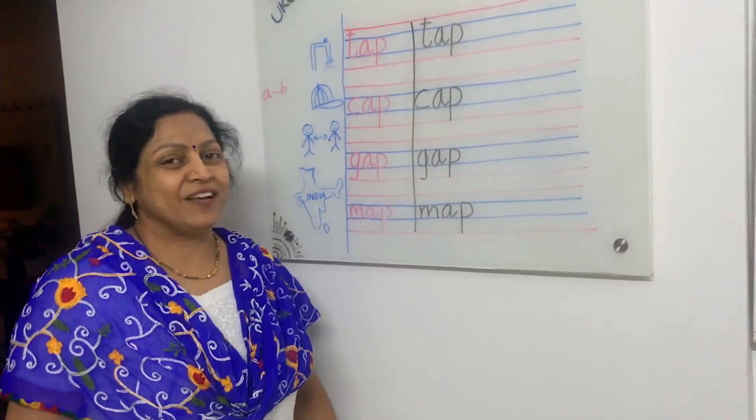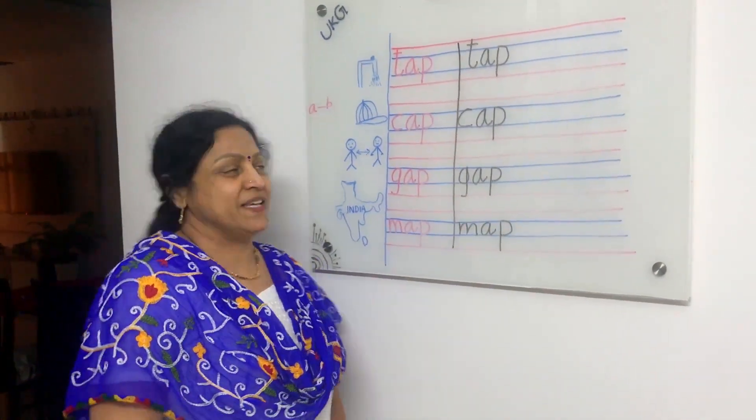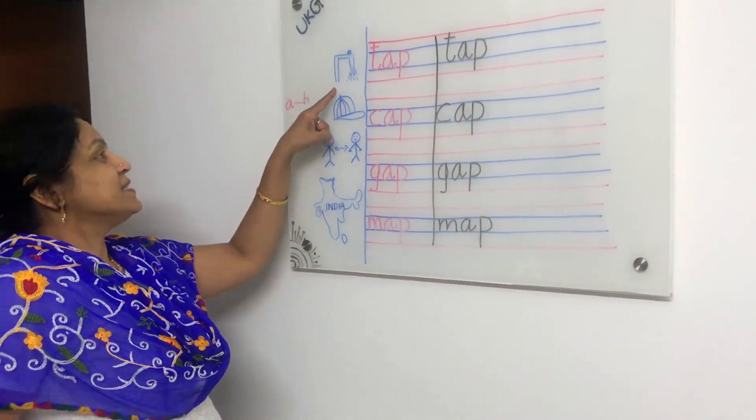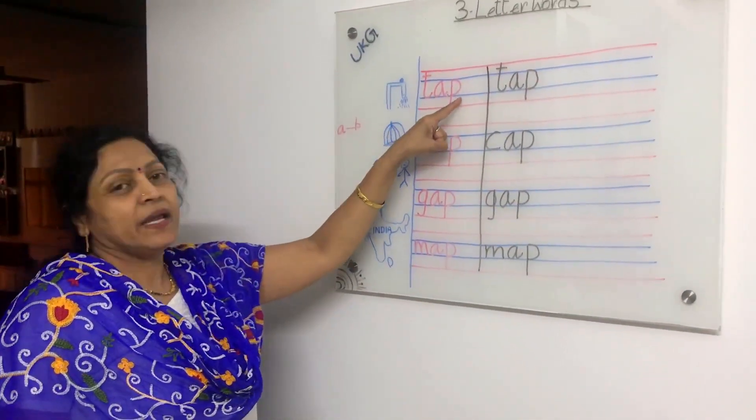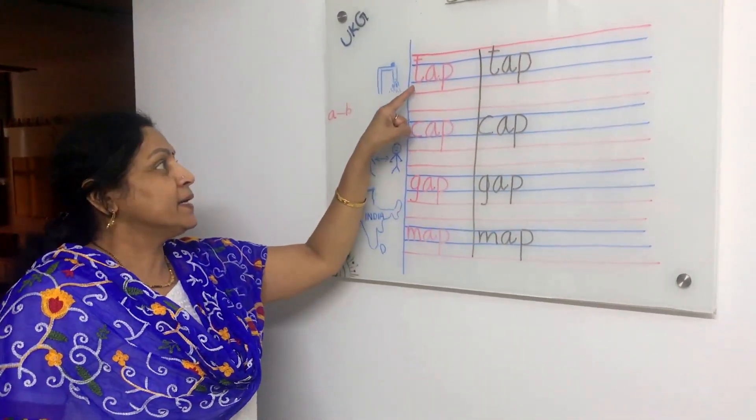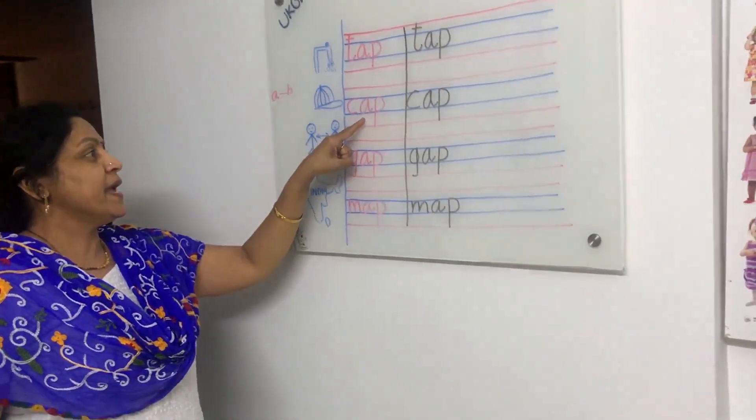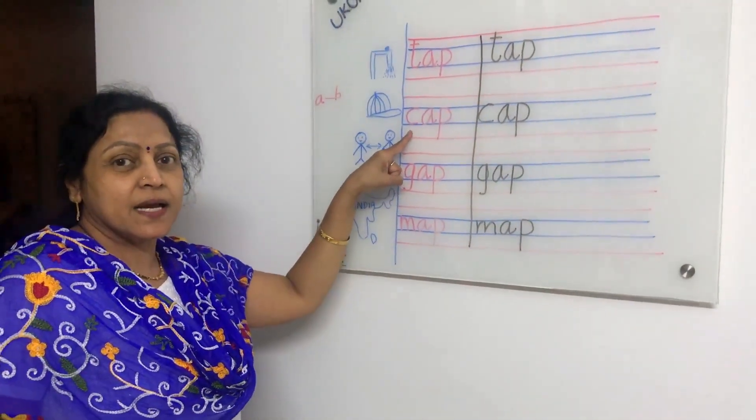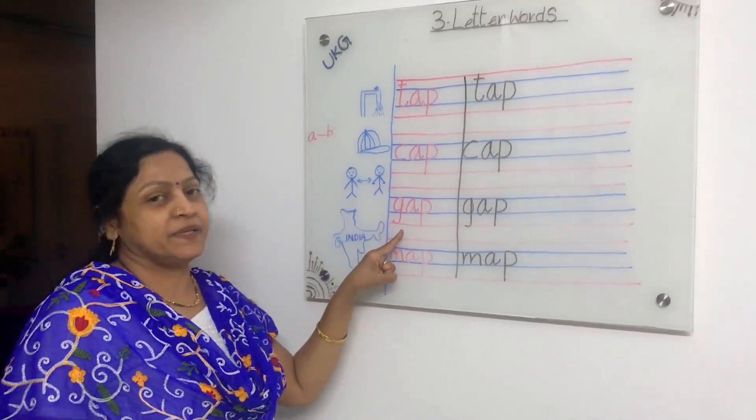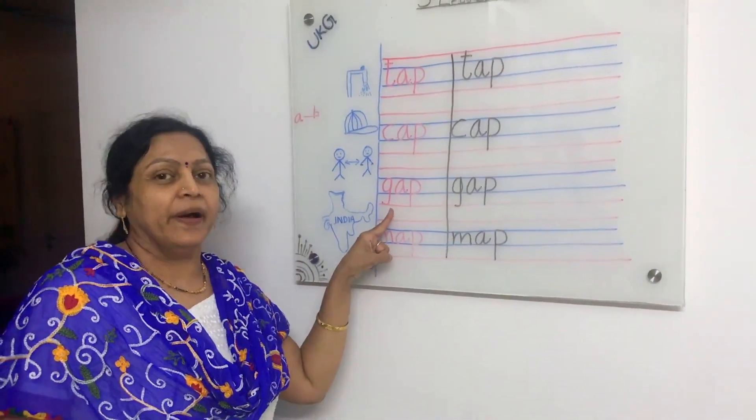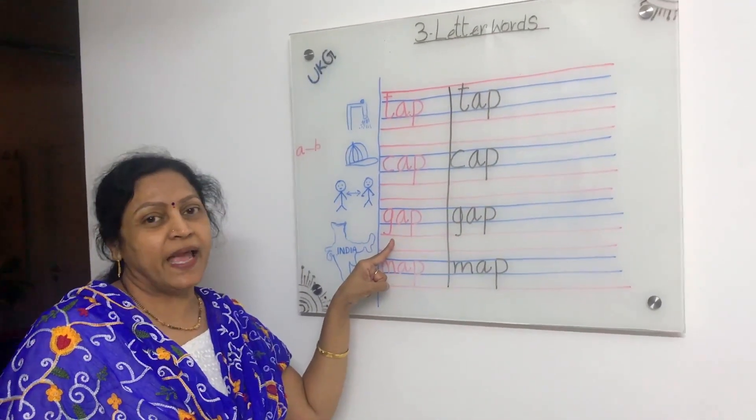Shall we revise all the words, children? Ready? Come on. See here. What is this? T, A, P, tap. T, A, P, tap. C, A, P, cap. G, A, P, gap.